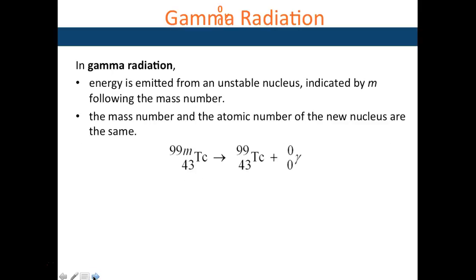In gamma radiation, it's the same element. It's very unstable - hence the 'm' indicating it's metastable or unstable. Once it loses that excess energy as gamma rays, it becomes stable.